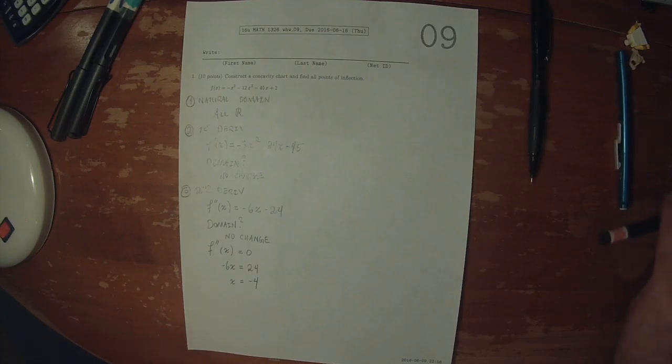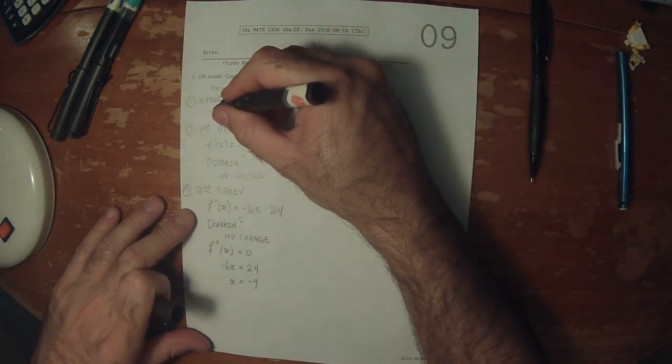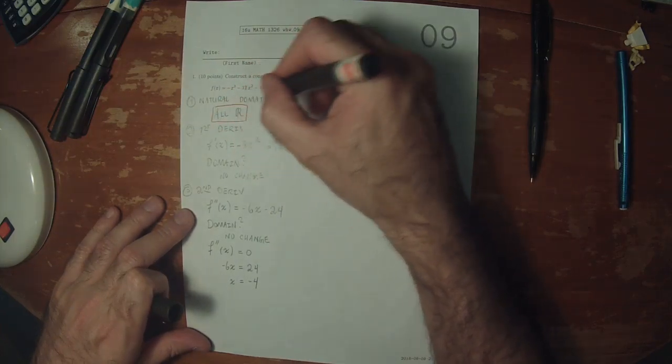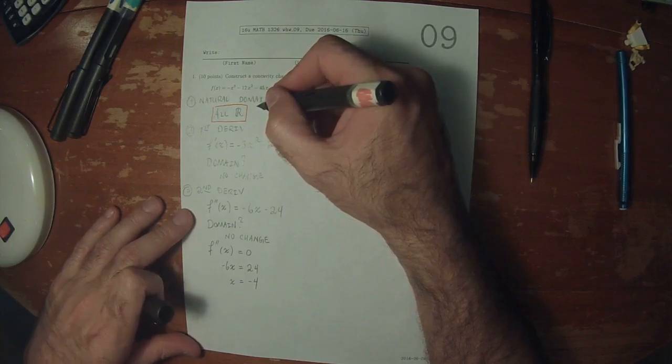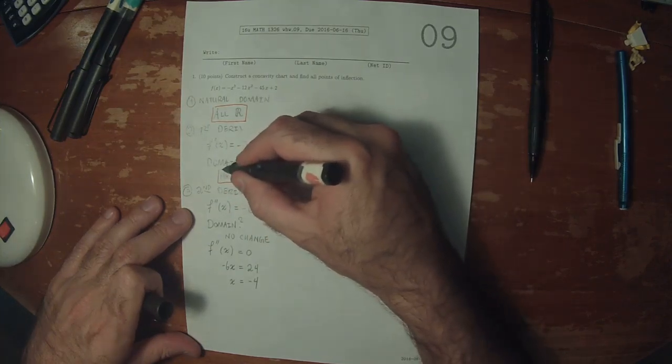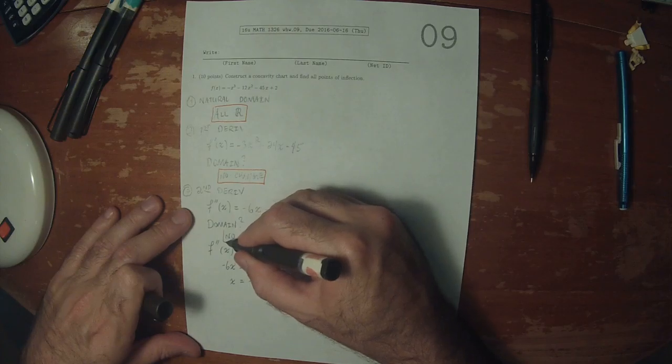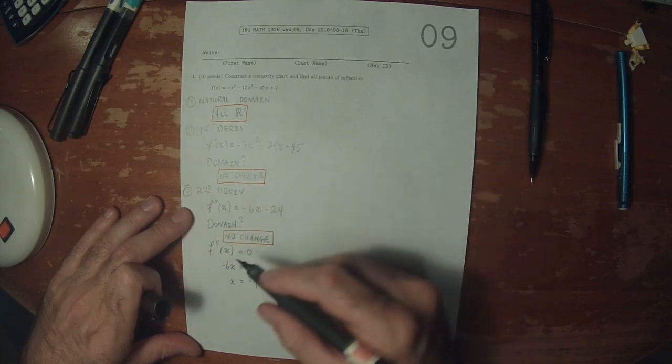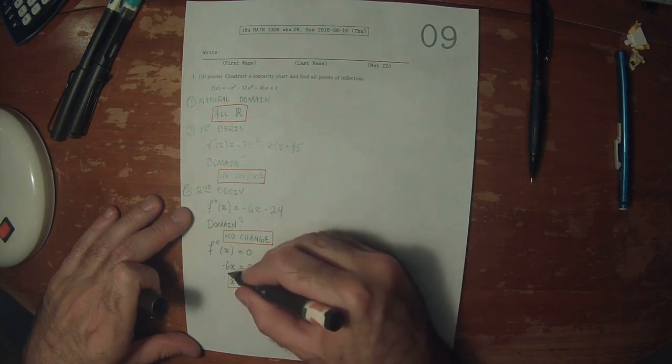All the work to here has been collecting values. The first place we could have collected something was at the natural domain, but we collected nothing because there were no breaks. The second place was at the first derivative, but we collected nothing. The third place was at the second derivative, but again no breaks. Finally, at the zeros of the second derivative, we collected a single point.